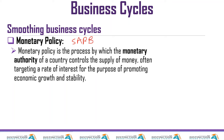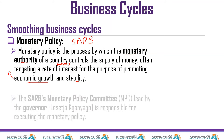The monetary policy is the process by which the monetary authority — the SARB — of the country controls the supply of money, often targeting the rate of interest, which we call the repo rate, for the purpose of promoting economic growth and stability. This takes us back to the macroeconomic objectives.